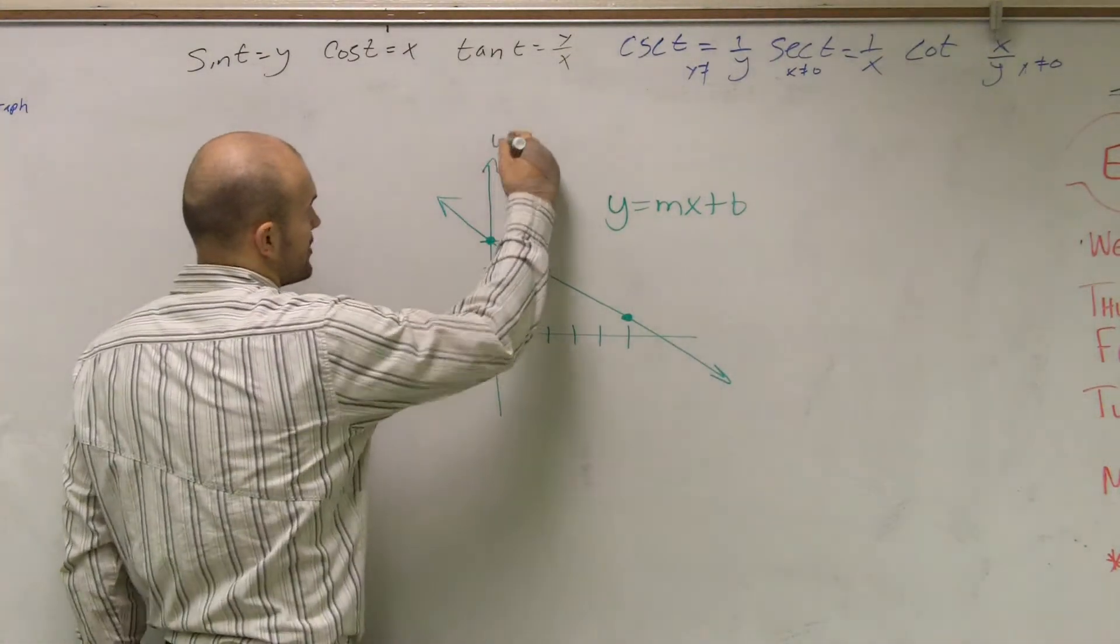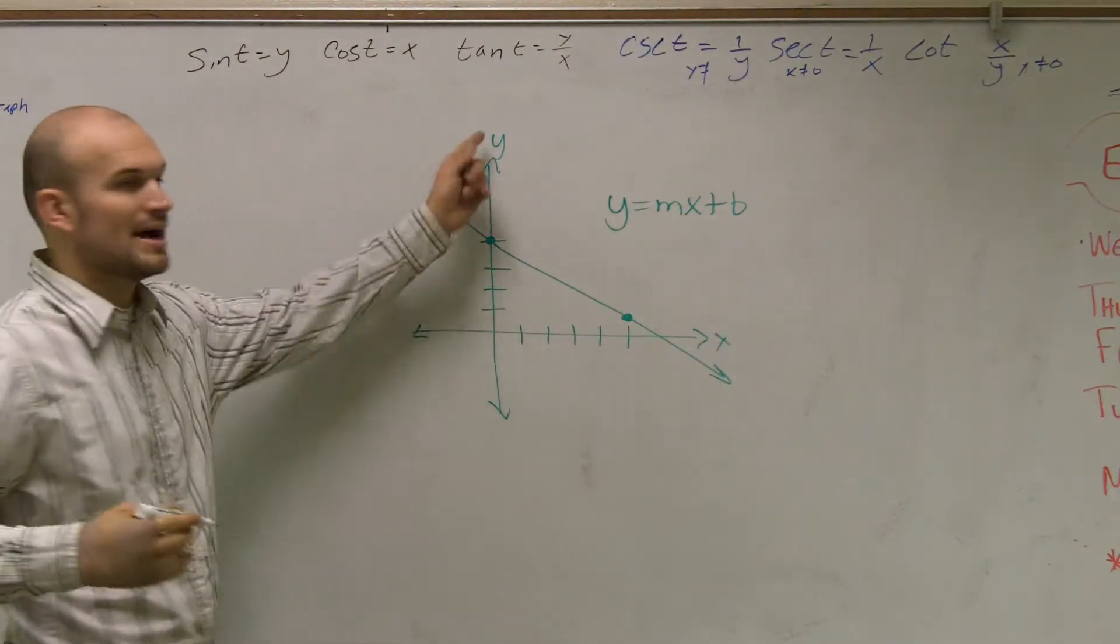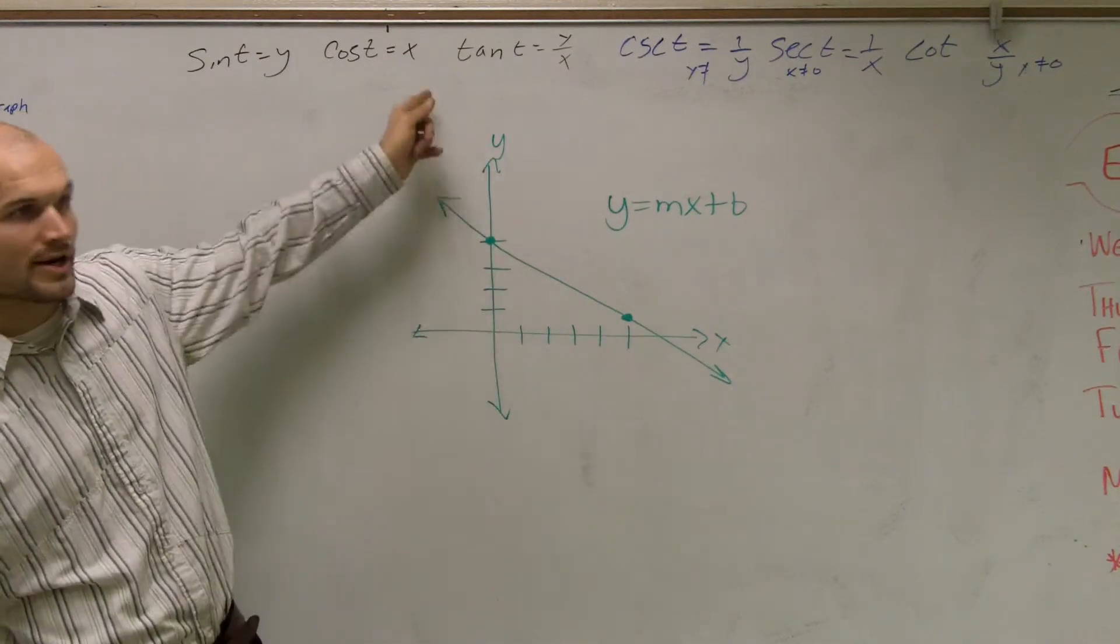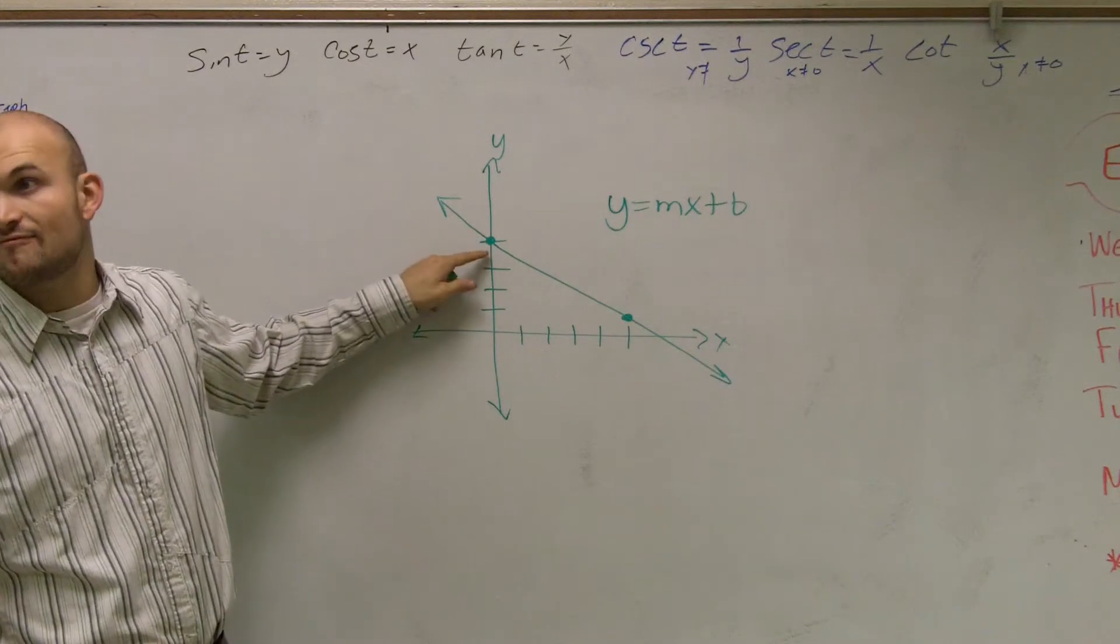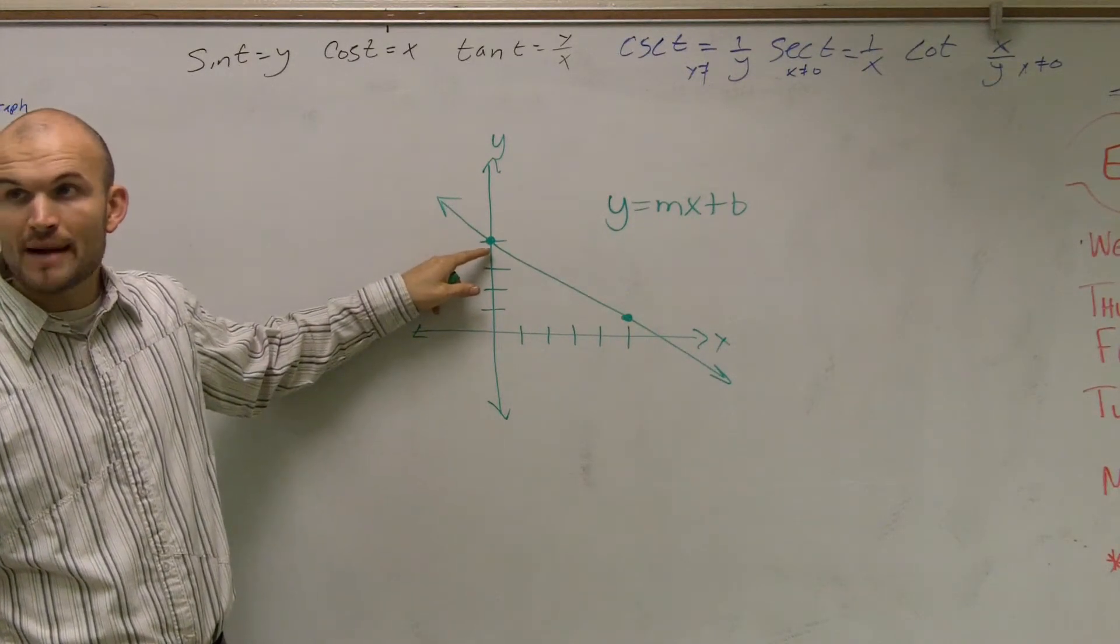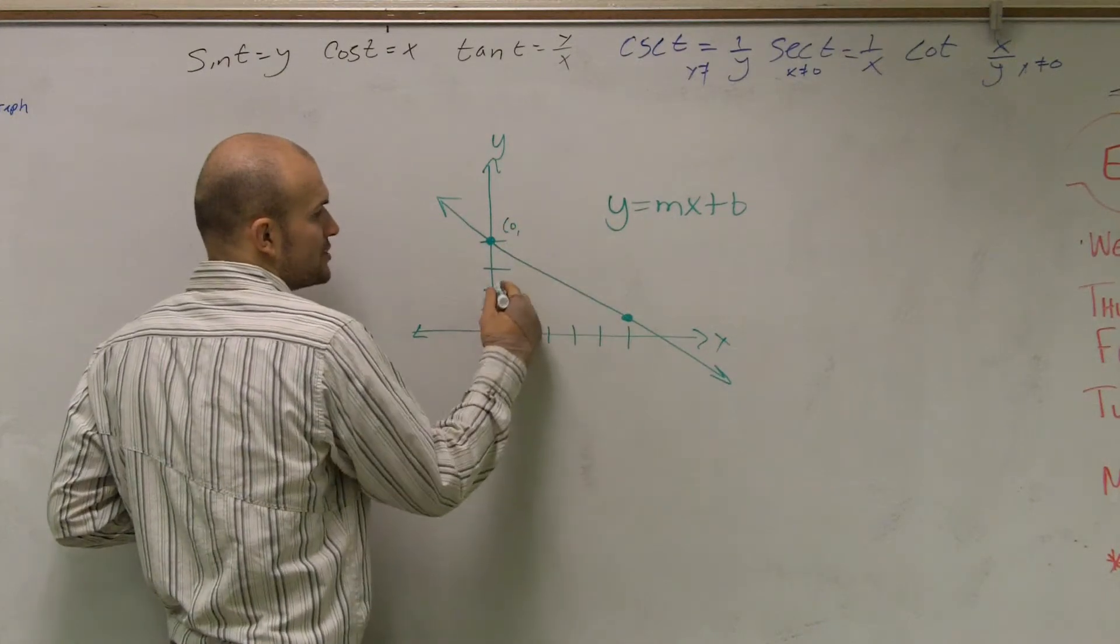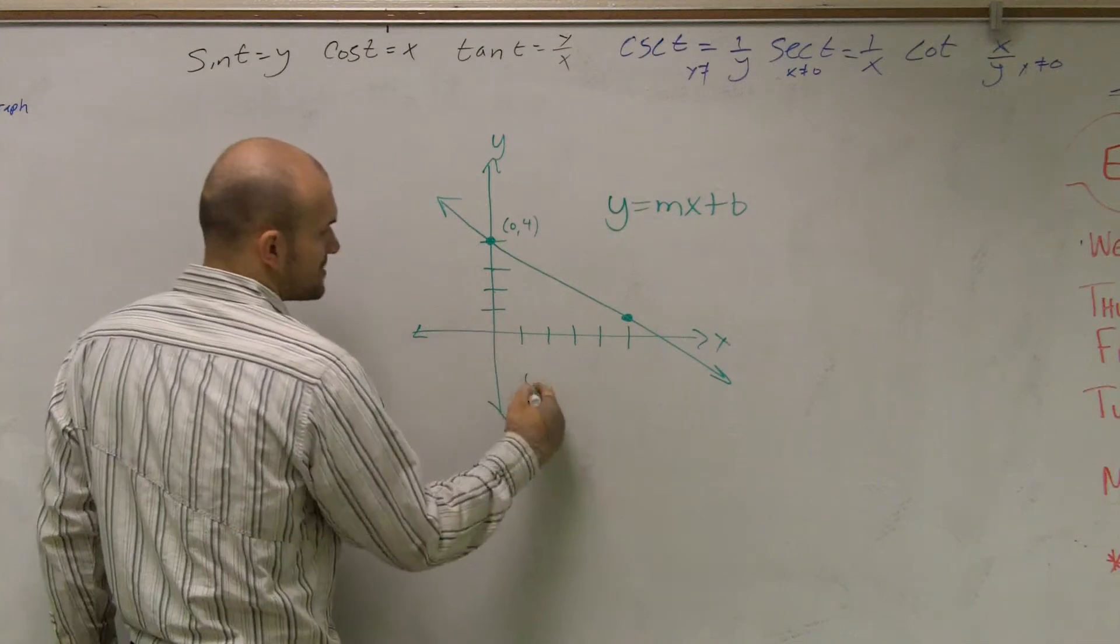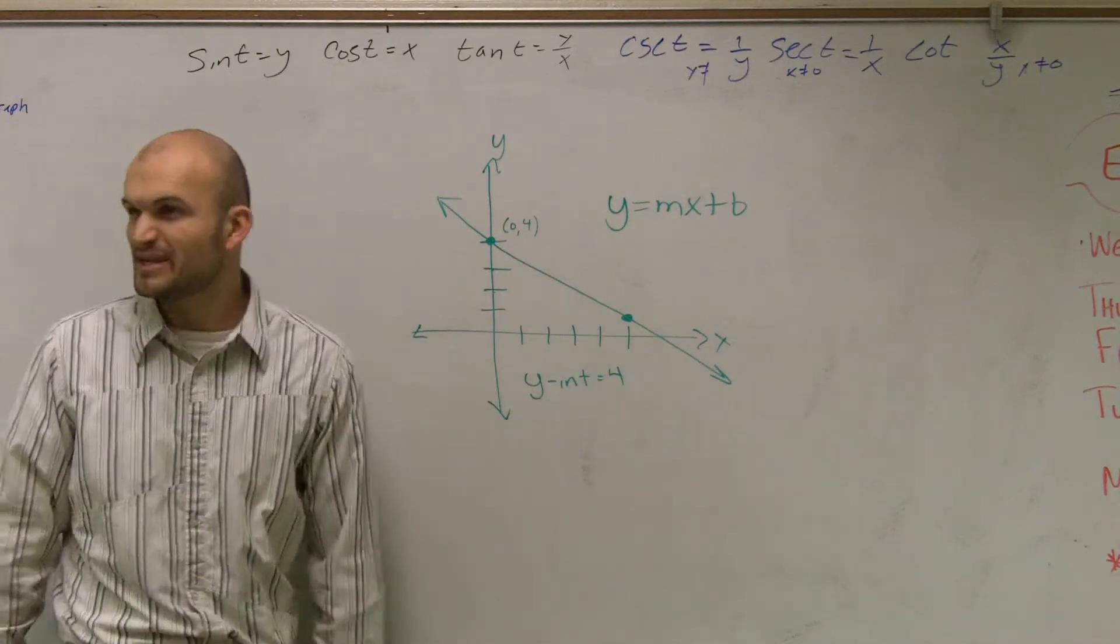So I look at this and I say, where's my y-axis? Oh, my y-axis is right here. So where does the graph cross this wonderful magical line? It crosses right here. What is the value of my point here? You could say it's at 0 comma 1, 2, 3, 4. So what I can say is my y-intercept is equal to 4. Does that make sense for everybody?